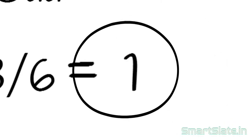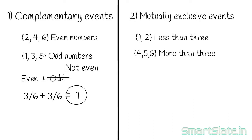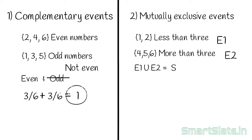Now let's consider why getting less than 3 and getting more than 3 are mutually exclusive events. Getting less than 3 has elementary events {1, 2}, and getting more than 3 has elementary events {4, 5, 6}. Calling these E1 and E2 respectively, the union of E1 and E2 is not the full sample space because 3 is not in either event. Also, there is no common elementary event between E1 and E2 — E1 can occur only when E2 cannot, and vice versa. When the union of two events is not the sample space and they share no common elementary events, they are called mutually exclusive events.